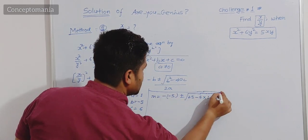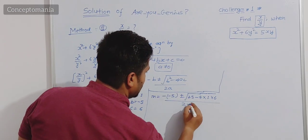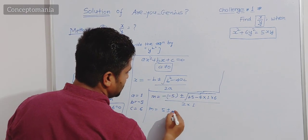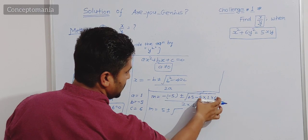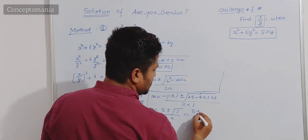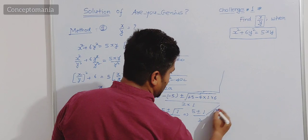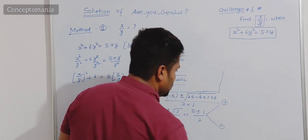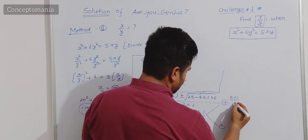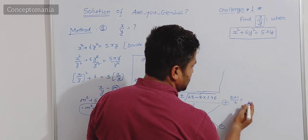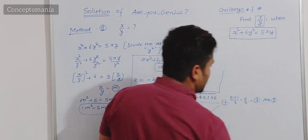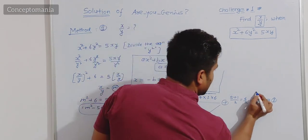Simplifying: m equals 5 plus minus root over 25 minus 24, divided by 2. That is 5 plus minus root over 1, divided by 2. Root of 1 is 1. So m equals 5 plus 1 upon 2 or 5 minus 1 upon 2. Taking plus: m equals 6 upon 2 equals 3. Taking minus: m equals 4 upon 2 equals 2.